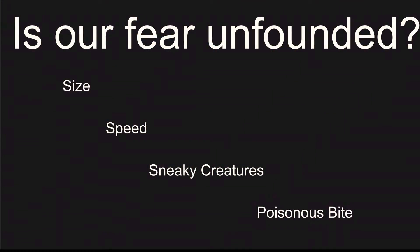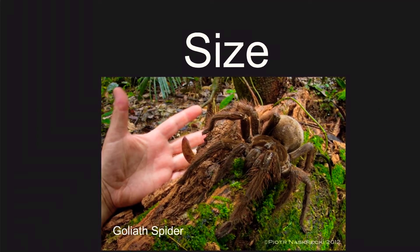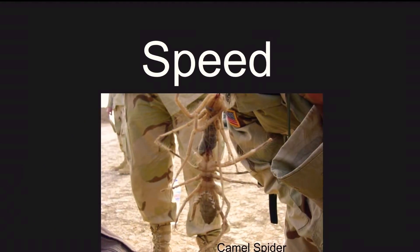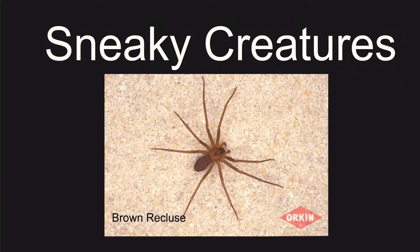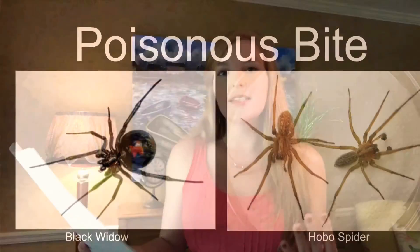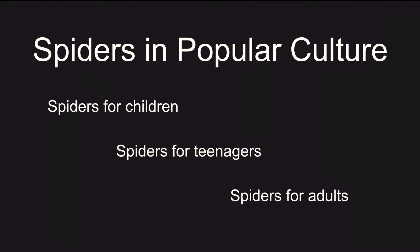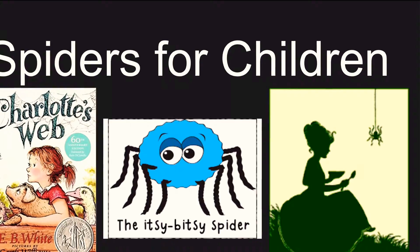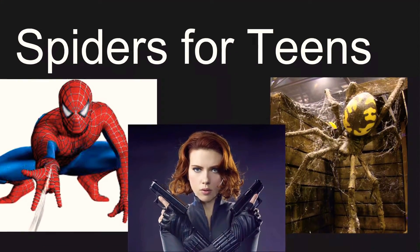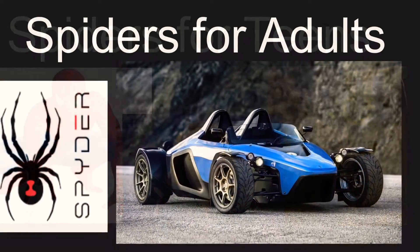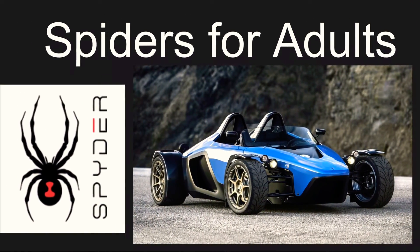My third sub-point is mating and reproduction — those are all under spider habits. My second main point is: are our fears of spiders unfounded? I'm going to talk about four things in this point: size, mentioning a goliath bird-eating spider; speed, talking about a camel spider; how they're sneaky creatures that like to live in the dark like the brown recluse; and how they can have a poisonous bite, talking about a black widow spider and hobo spider. My final and third main point is spiders in popular culture, with three categories: spiders for children like Charlotte's Web; spiders for teenagers like Spiderman comics or Halloween decor; and spiders for adults, movies like Arachnophobia and branding like the spider brand.